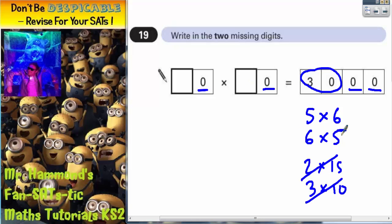We're going to have to go with a 5 times a 6. So we can either make this 50 times 60, or we could have had 60 times 50.